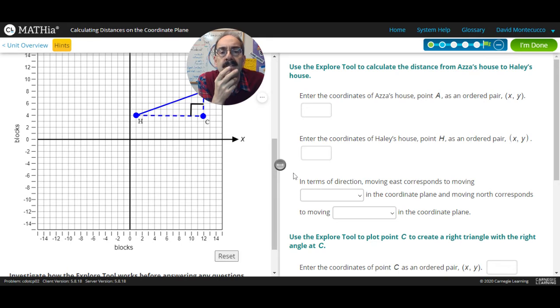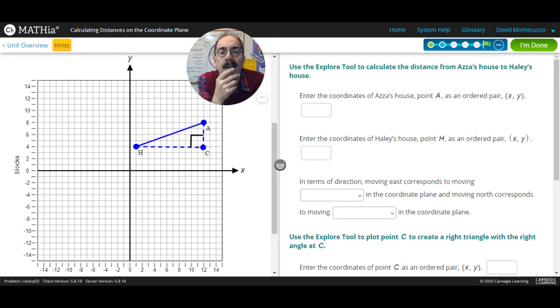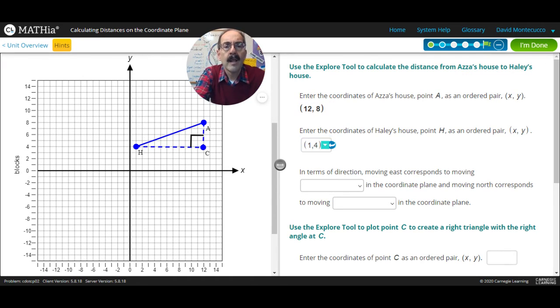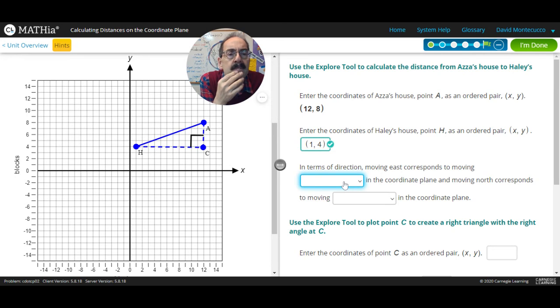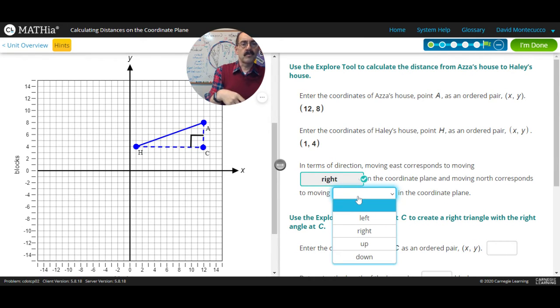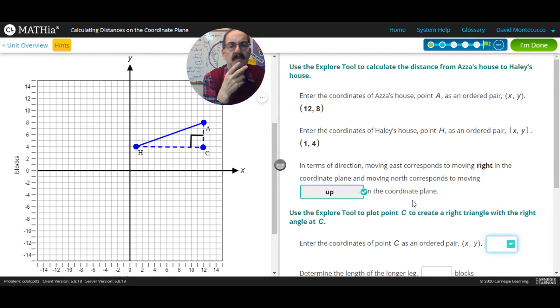So enter the coordinates of Asa's house A. So we're going to go parenthesis, what, 12 comma 8. And then H's house, Haley's house, 1 comma 4. And in terms of direction moving east, let's say east. East is going to be to the right. And moving towards, so that's going to be up. So we went over and up. The rise over the run.